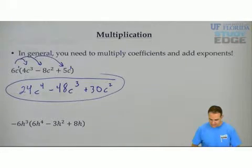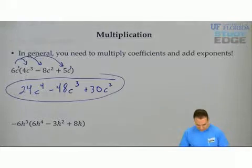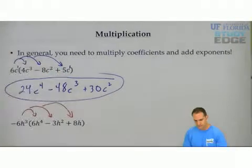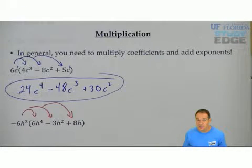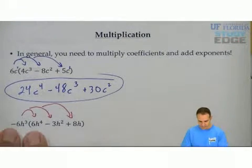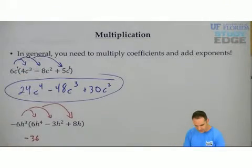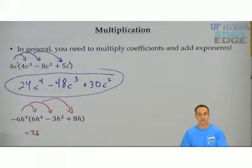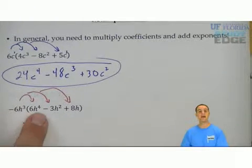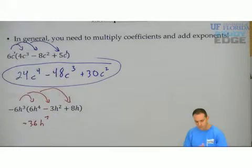Let's do it again. In this next one, we're going to multiply negative 6h to the third power to each term in the parentheses. Multiply the coefficients, add the exponents. Negative 6 times 6 gives you negative 36. h to the third times h to the fourth: add together gives you h to the seventh power.